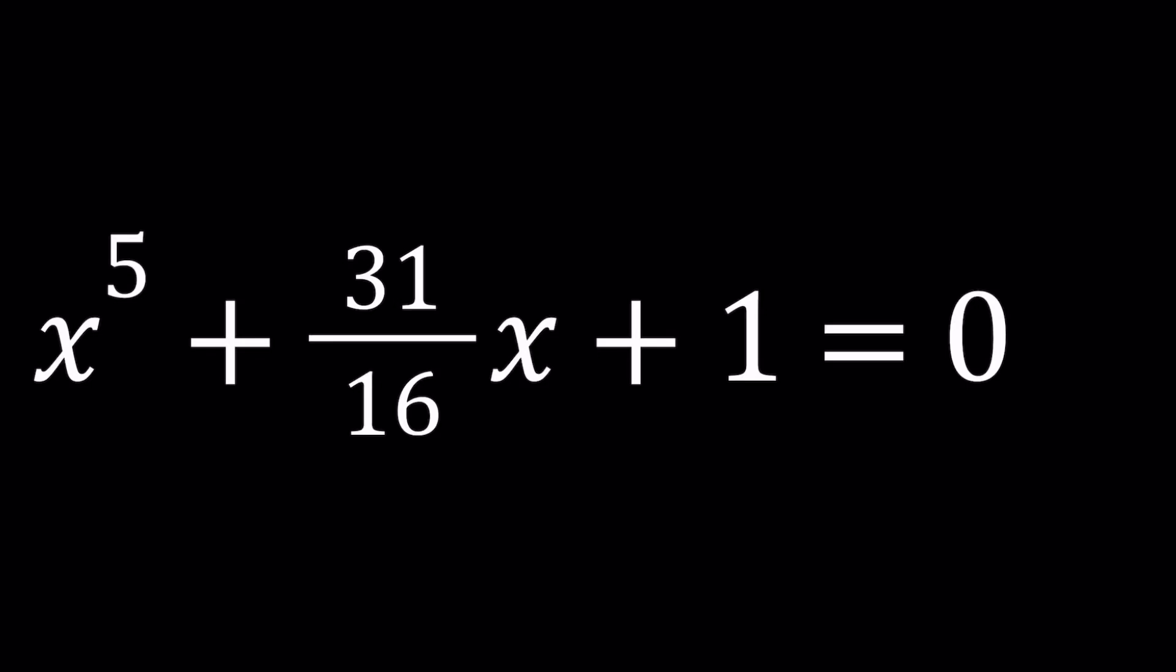Hello everyone, in this video we're going to be solving a quintic equation without using the quintic formula. Do you know why? We'll talk about it in a little bit. So we have x to the fifth power plus 31 over 16 times x plus 1 equals 0, and we're going to be approaching it from different angles.